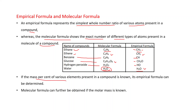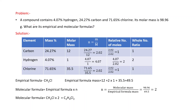If the mass percent of various elements present in a compound is known, its empirical formula can be determined. The molecular formula can further be obtained if the molar mass is known. Let's see an example. A compound contains 4.07% hydrogen, 24.27% carbon, and 71.65% chlorine, and its molar mass is 98.96 g/mol. We need to find its empirical and molecular formulas. Let's make a table.